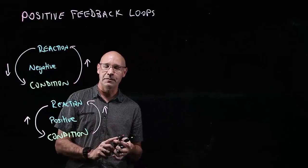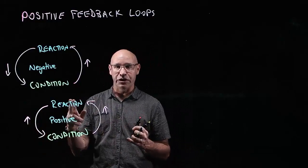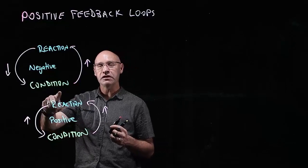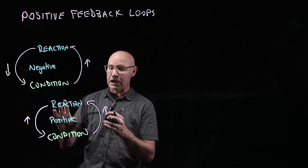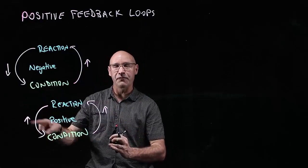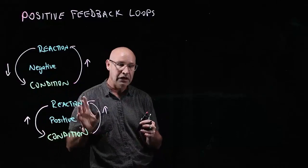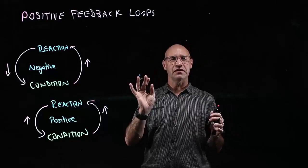Whereas a positive feedback loop is the opposite. The reaction actually makes the condition worse because it continues to increase that destabilizing effect. That's a positive feedback loop and it very rapidly spins out of control and gets worse and worse. I want to explain how that happens with global warming—there's a couple of factors.